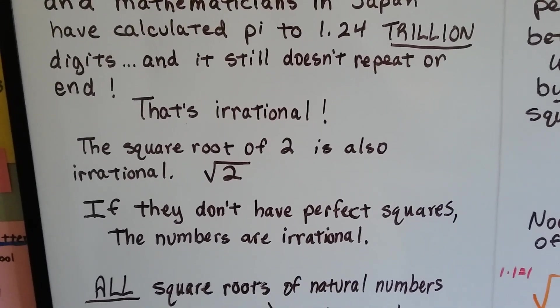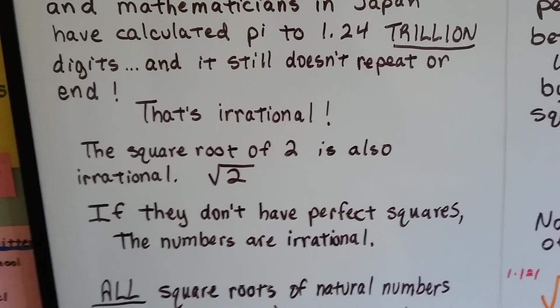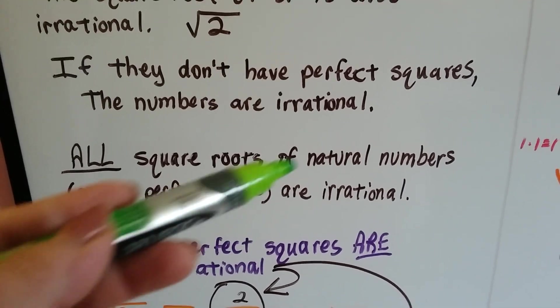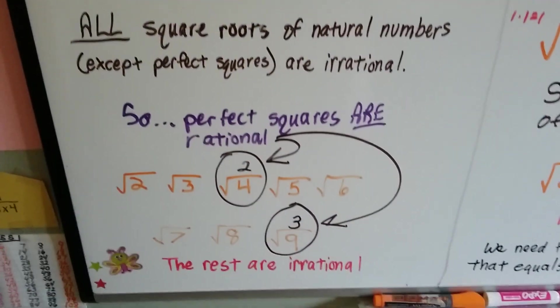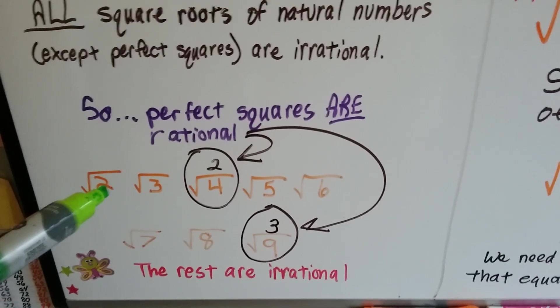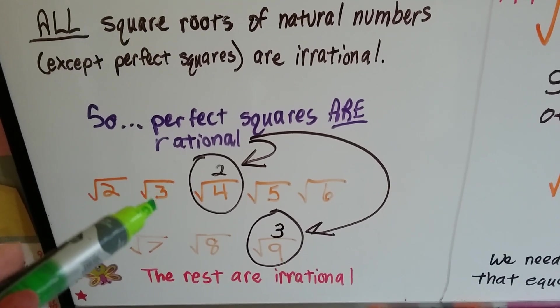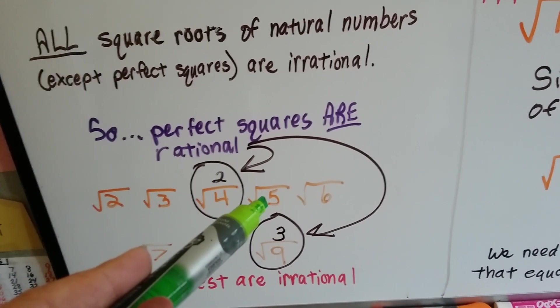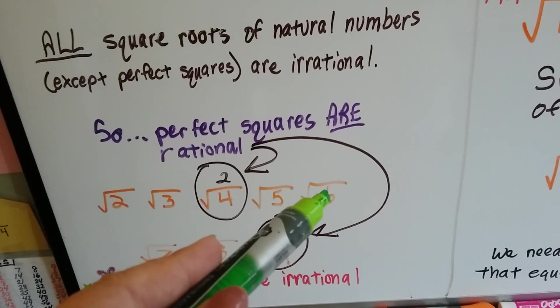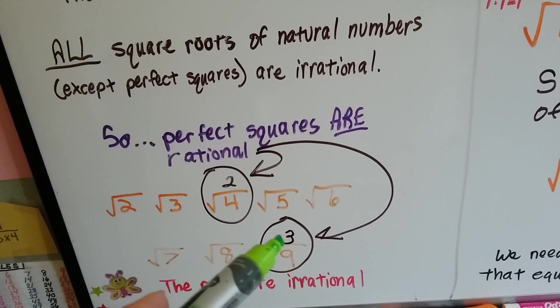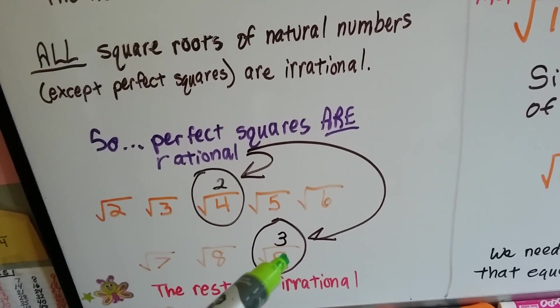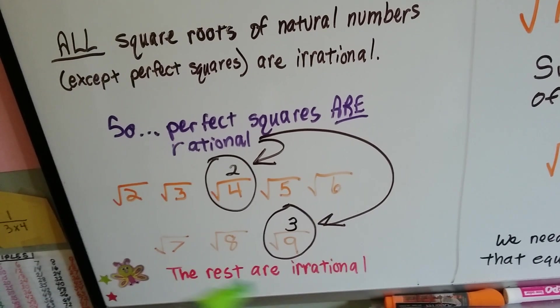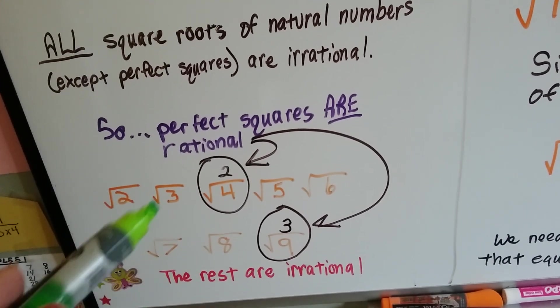The square root of 2 is also irrational. If they don't have perfect squares, the numbers are irrational. So all square roots of natural numbers except perfect squares are irrational. So take a look at these: the square root of 2, that's irrational. Square root of 3, that's irrational. Square root of 4 - well, 2 times 2 is 4, so that one's rational. Square root of 5, 6, 7, 8 - not until we get to the square root of 9, which is 3 times 3, do we hit another rational number.